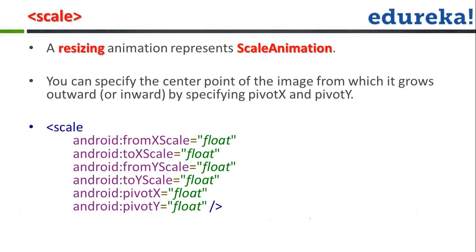Scale animation is a resizing animation. You can specify the center point of the image from which it grows outward or inward — that's the zoom in/zoom out effect. The parameters are fromXScale, toXScale, fromYScale, and toYScale as float values. X and Y here represent width and height. So you define starting at 0 width and 0 height — a very small dot — and animate to 100 width and 100 height, creating the zoom in effect as the object grows from near-zero to full size in an animated format.